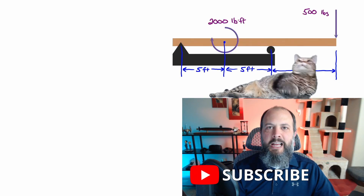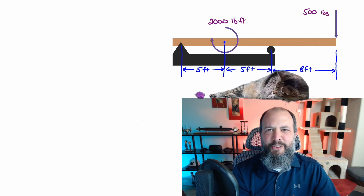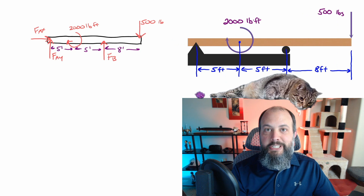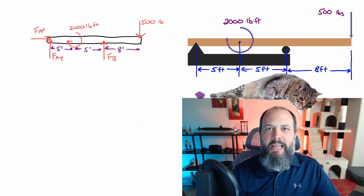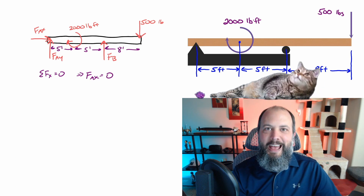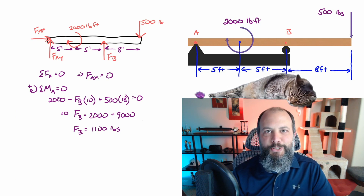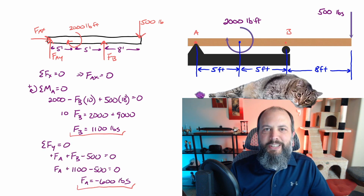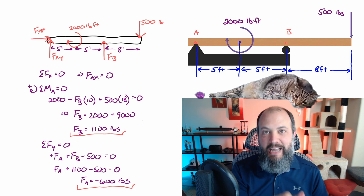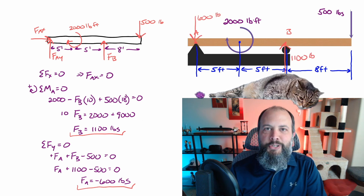Halfway done — one problem to go. Same point force, same point moment, but this time a pin and roller joint instead of a fixed joint. I'll ignore the tiny section of beam just to the left of the pin since there are no forces there. Step one: free body diagram and reaction forces. There are no x-direction forces, so FAx = 0. Sum of moments about the pin gives the roller force at B as 1,100 pounds. Sum of forces in y gives negative 600 pounds at A — the pin joint is actually holding the left side of the beam downward, not pushing up.